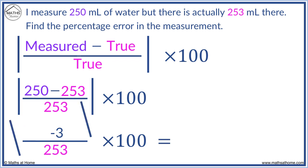The absolute value operation means to ignore the negative on the 3. We just use the positive result. So 3 divided by 253 times 100 equals 1.19% error.